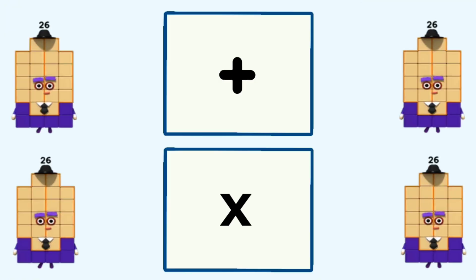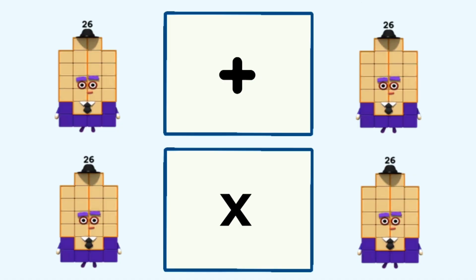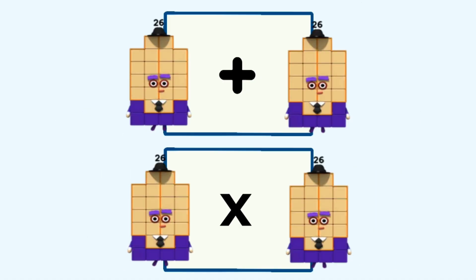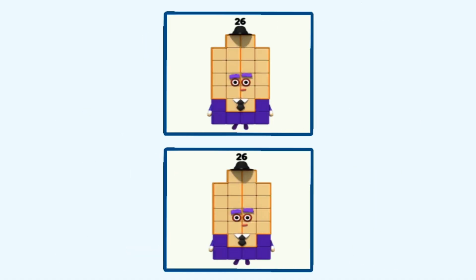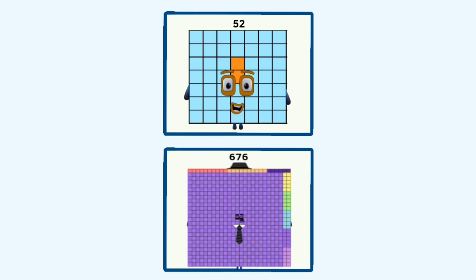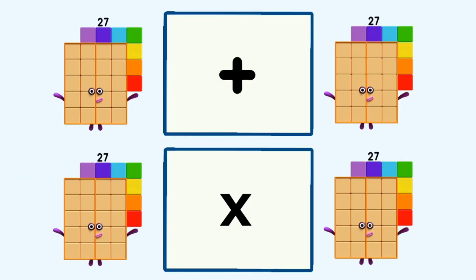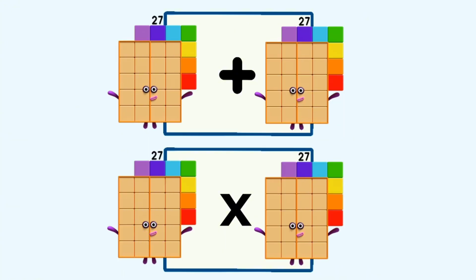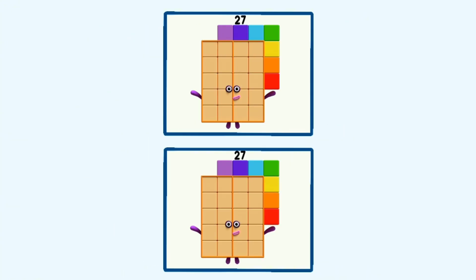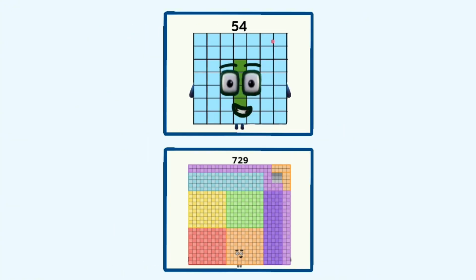26 plus 26 and 26 times 26 equals 52 and 676. 27 plus 27 and 27 times 27 equals 54 and 729.